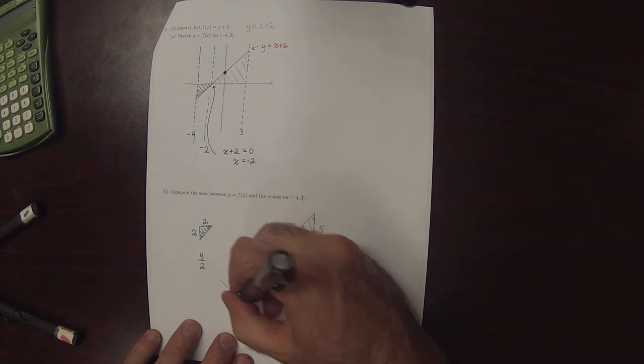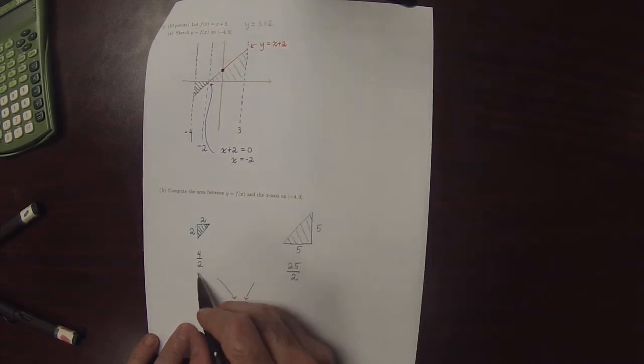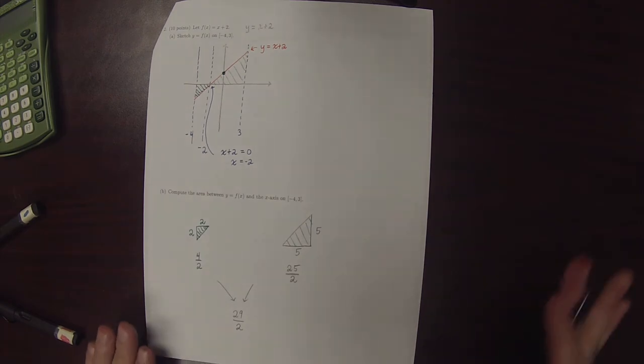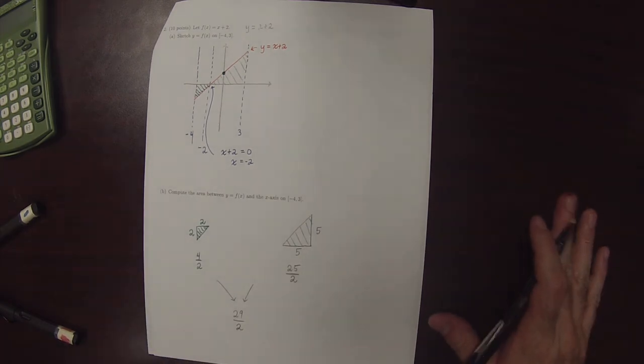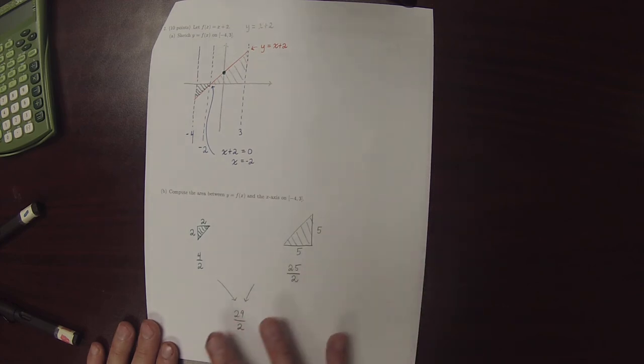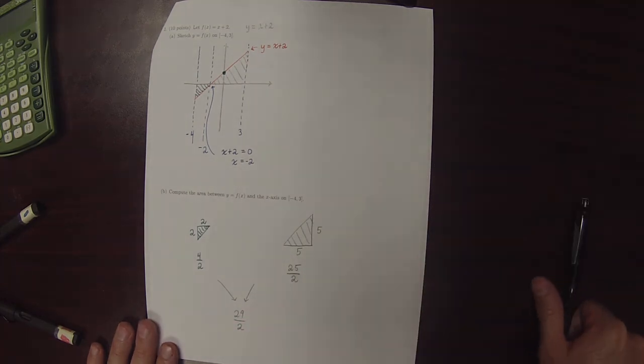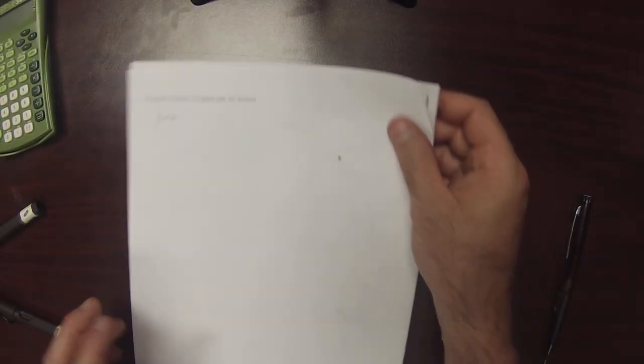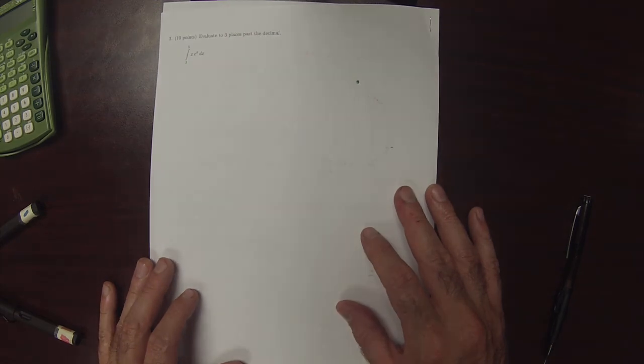So adding these two together, the area is 4 over 2 plus 25 over 2, so that's 29 over 2. And I'd like to point out that you could have used an integral, but it's easier to answer the question from a geometric point of view.